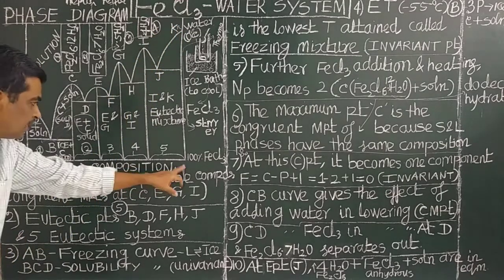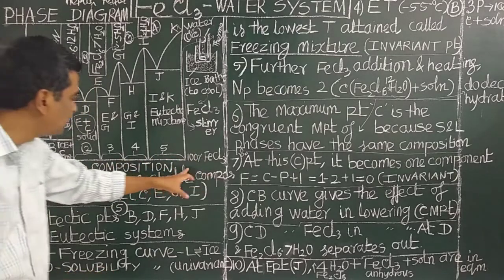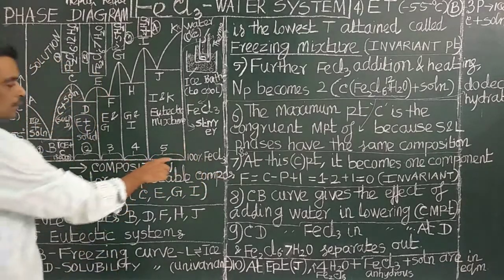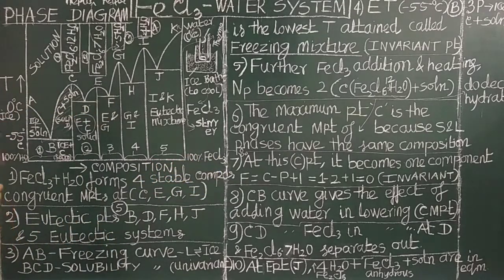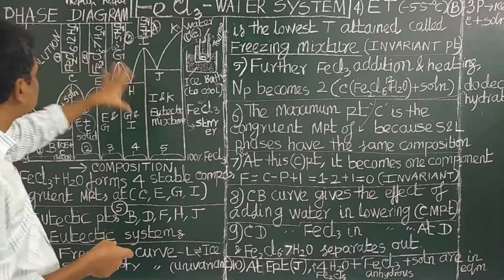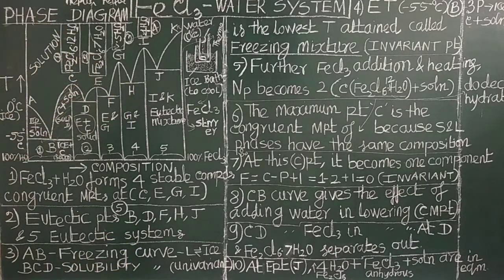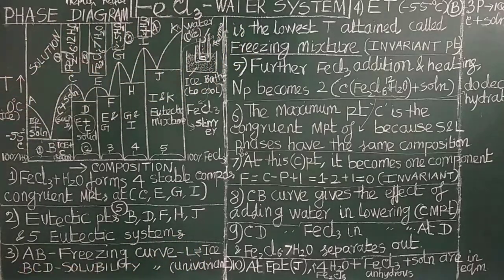On the y-axis, the left-hand side is 100% water — pure water. On adding ferric chloride, the composition increases. On the right side is 100% ferric chloride. At constant pressure, a graph is plotted between temperature and composition of ferric chloride. The graph obtained is called the phase diagram of the ferric chloride-water system.